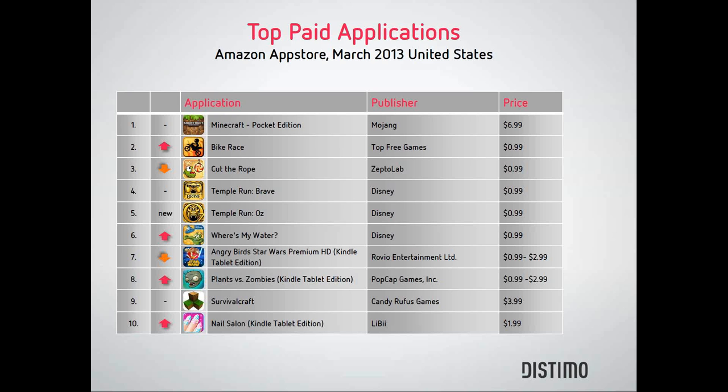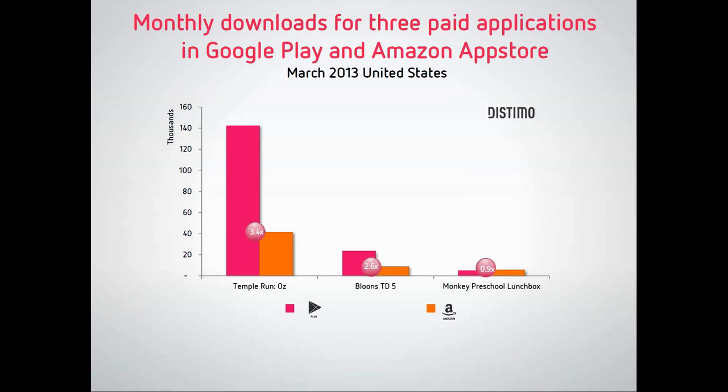With our daily estimates we are also able to make an estimation of gained one-off revenues in the Amazon App Store, which will be available in App IQ as well. Here we have three examples at the app level showing the proportion of monthly downloads between Google Play and Amazon App Store. The numbers are far lower, but the proportion of the Amazon App Store is more balanced with Google Play than you might expect. The highest example is around a 3.4 ratio, and the third example — Monkey Preschool Lunchbox — actually has more downloads in the Amazon App Store than in Google Play.